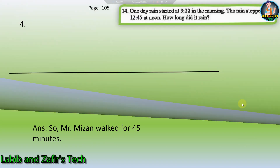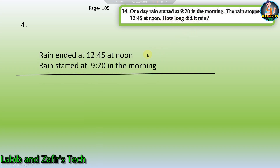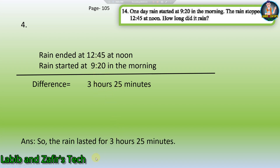Let's go through our fourth word problem. One day rain started at 9.20 in the morning. The rain stopped at 12.45 at noon. How long did it rain? Rain ended at 12.45 and started at 9.20, so we have to subtract. If we subtract then we get 3 hours 25 minutes, because 45 minus 20 is 25 and 12 minus 9 is 3. So the rain lasted for 3 hours 25 minutes.